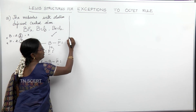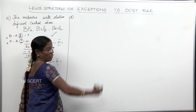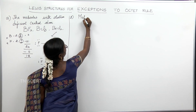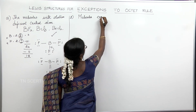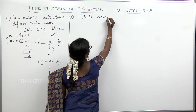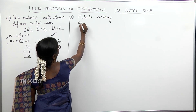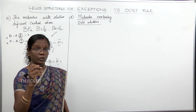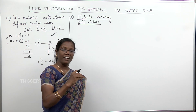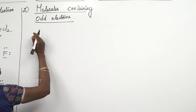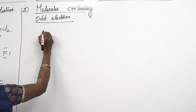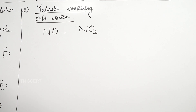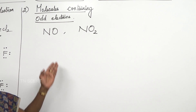The second category of molecules that are exceptions to the octet rule are those containing odd electrons — that is, molecules where the central atom has an odd number of electrons. Very good examples for this category are nitric oxide (NO) and nitrogen dioxide (NO₂). Let us first write the Lewis structure for nitric oxide.